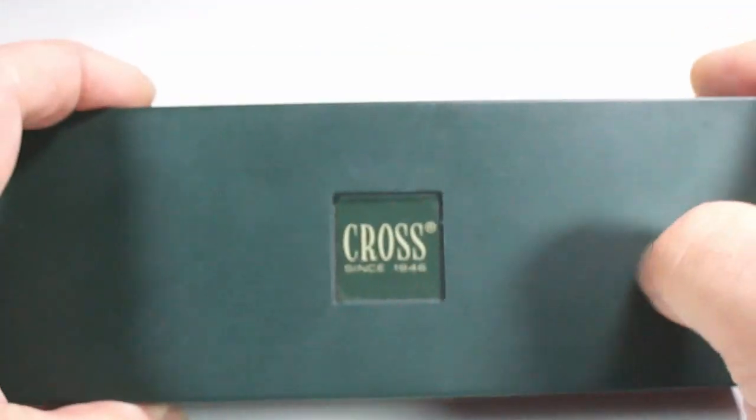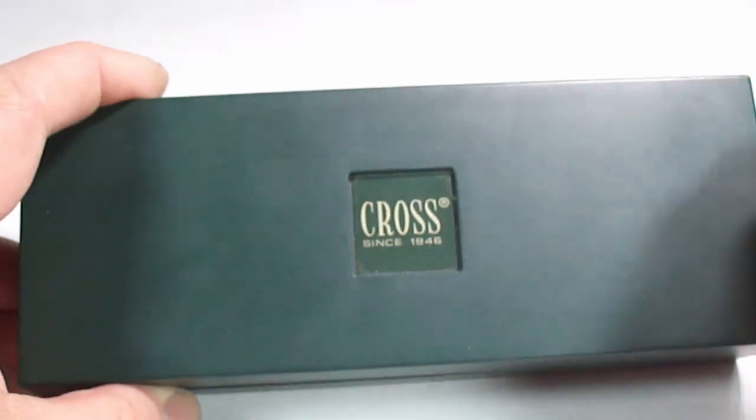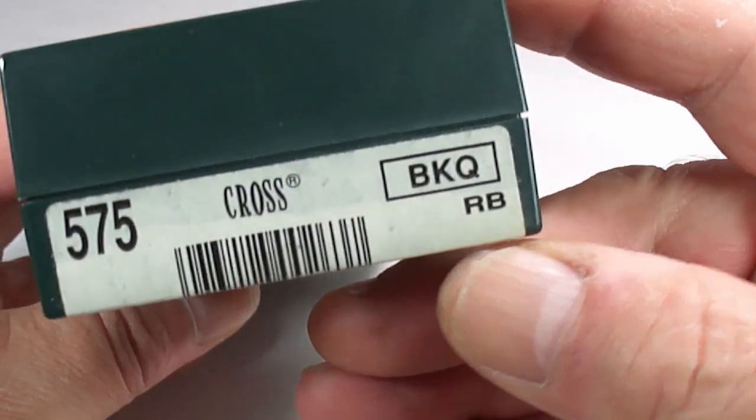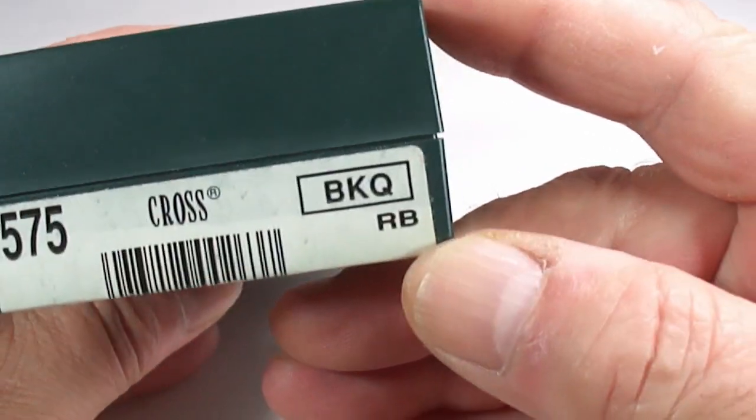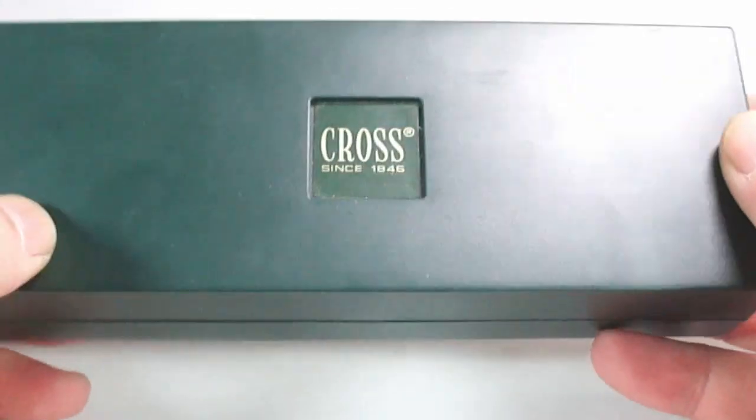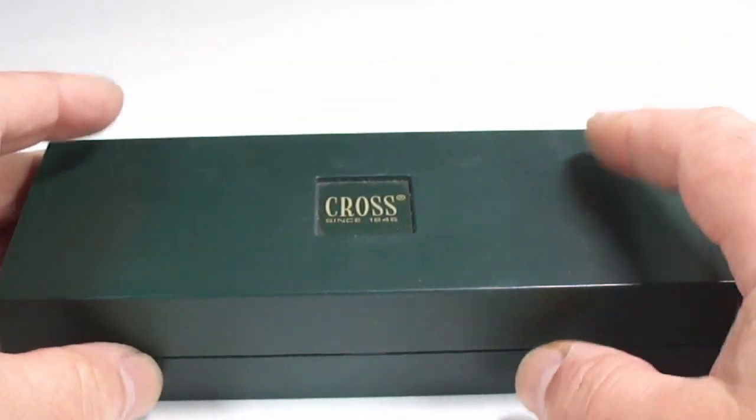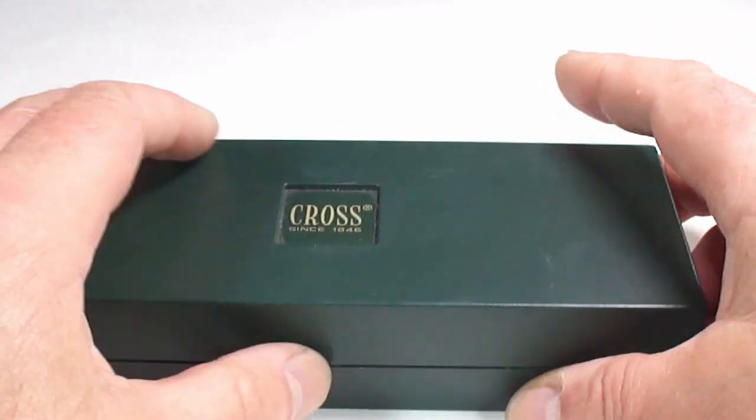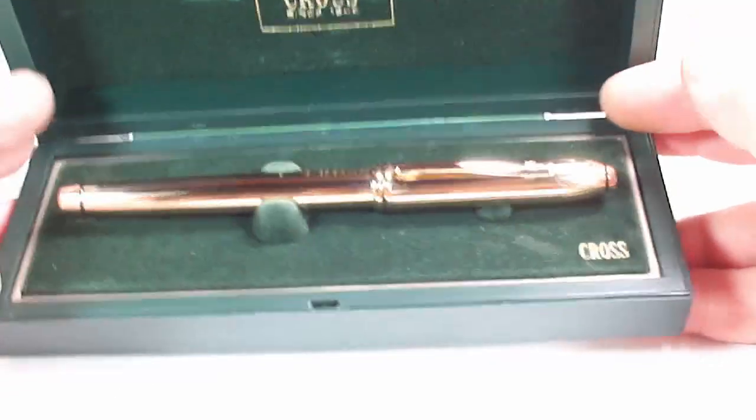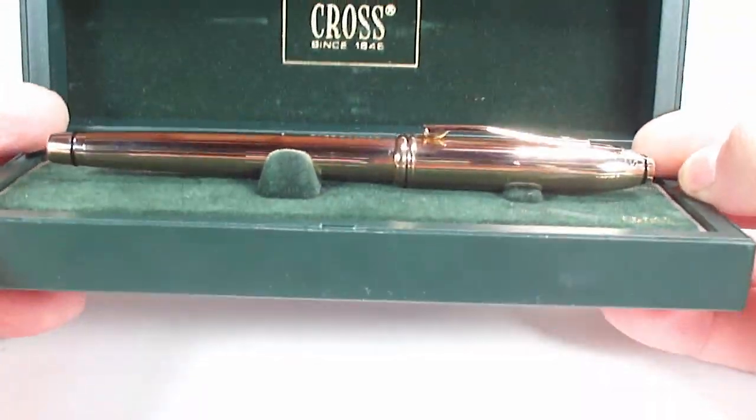As you can see, it's a Cross fountain pen. It's got the label there, but for some reason it's showing as a rollerball, but it's not. Here we have it, a Cross fountain pen. Let's open the case for you.